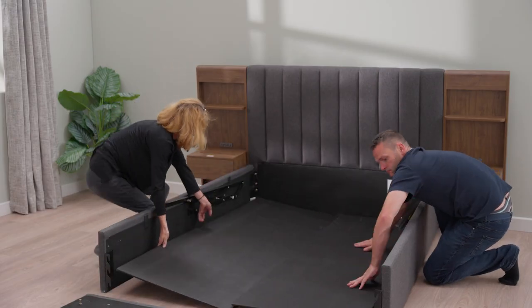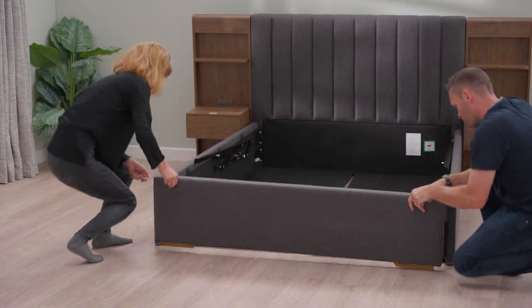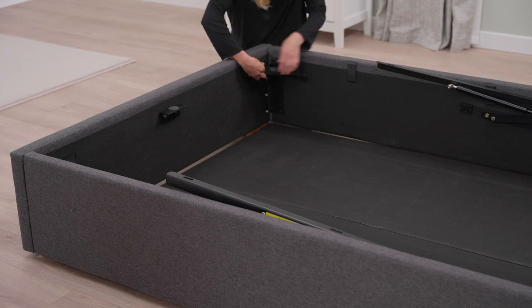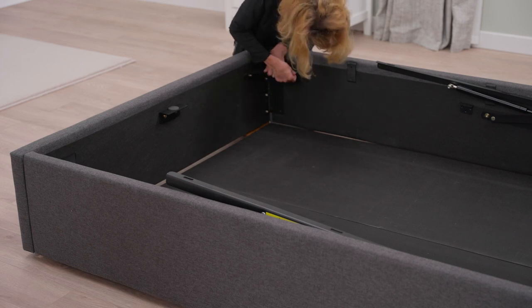Slide in the storage baseboards and then fit the footboard by hooking the side rails to the bolts inside. Next, fit the corner brackets, again tightening the bolts to 90%.